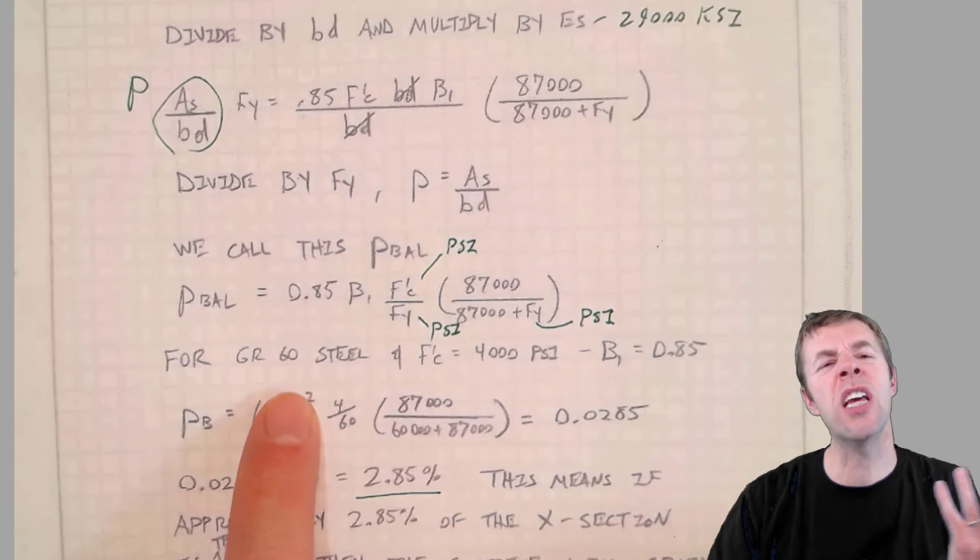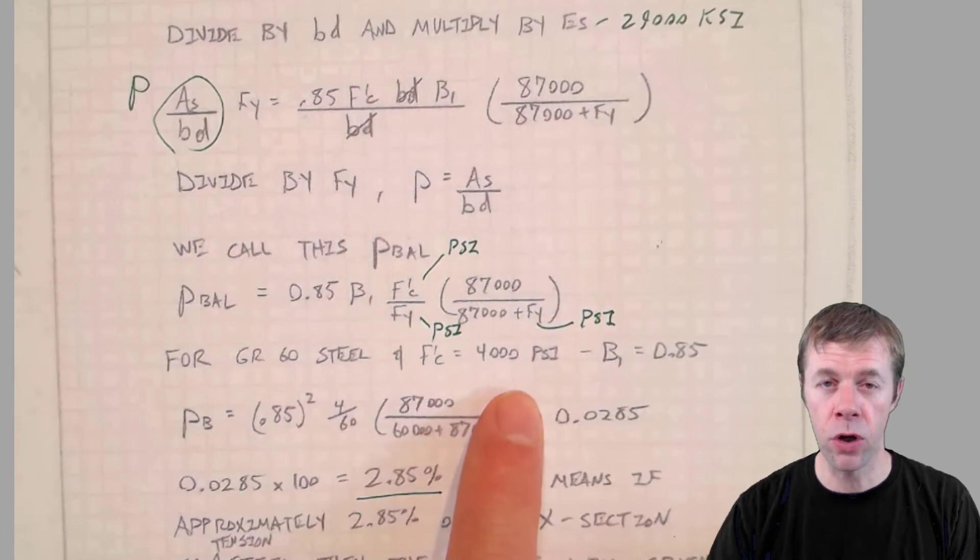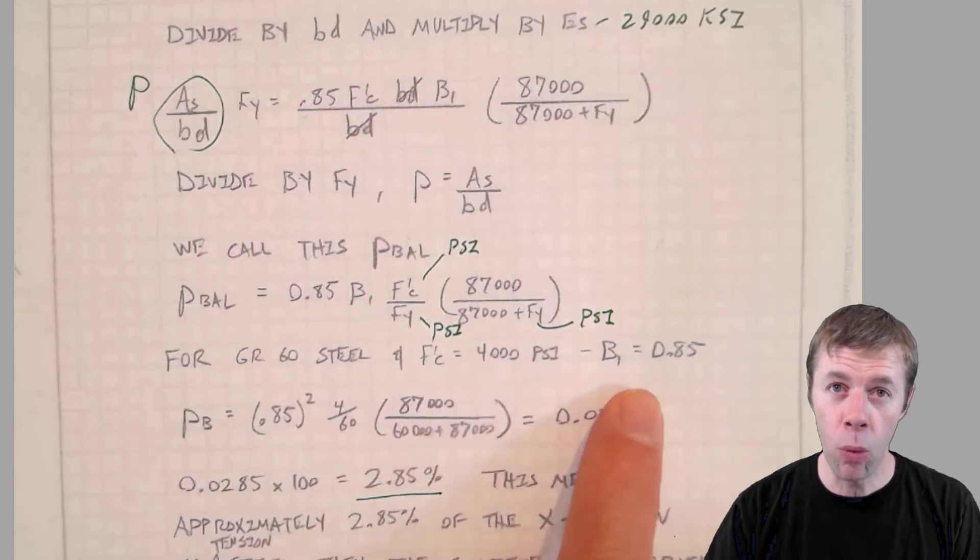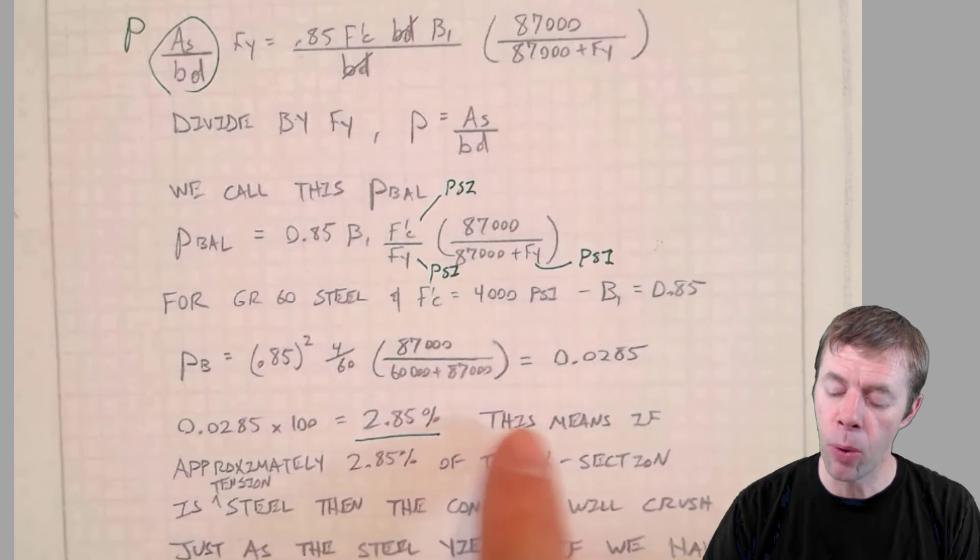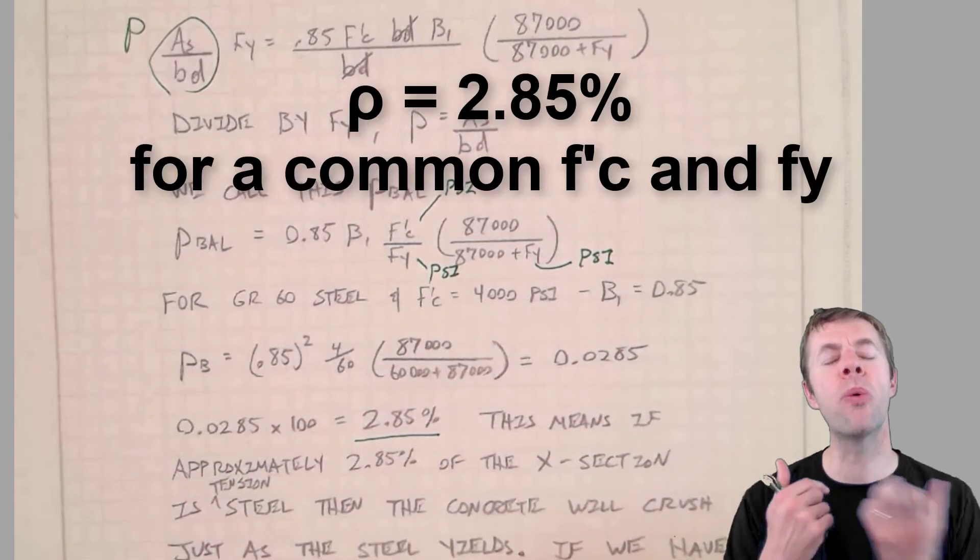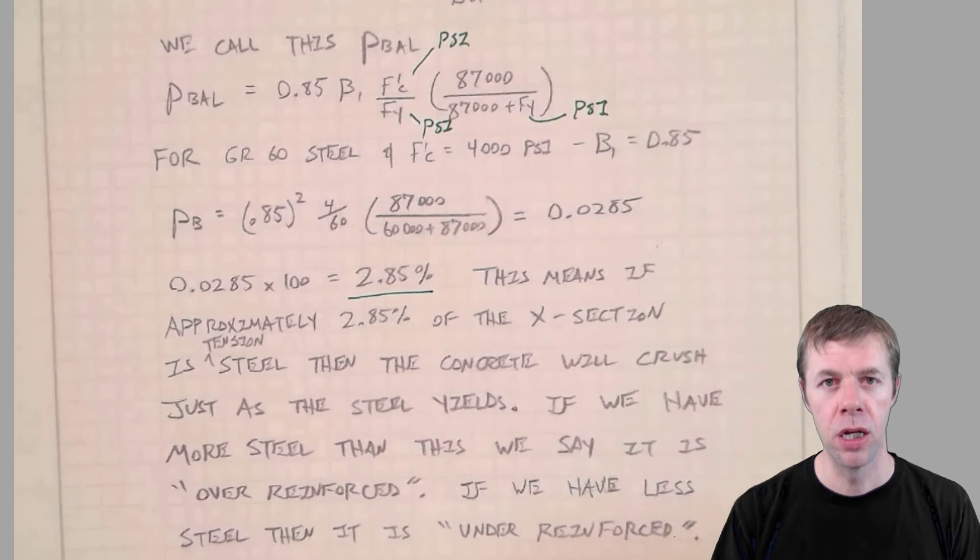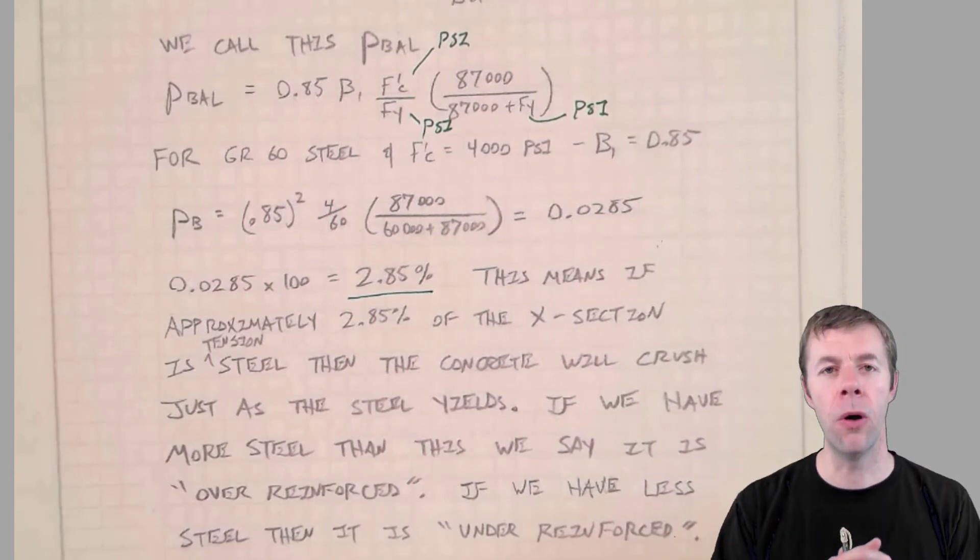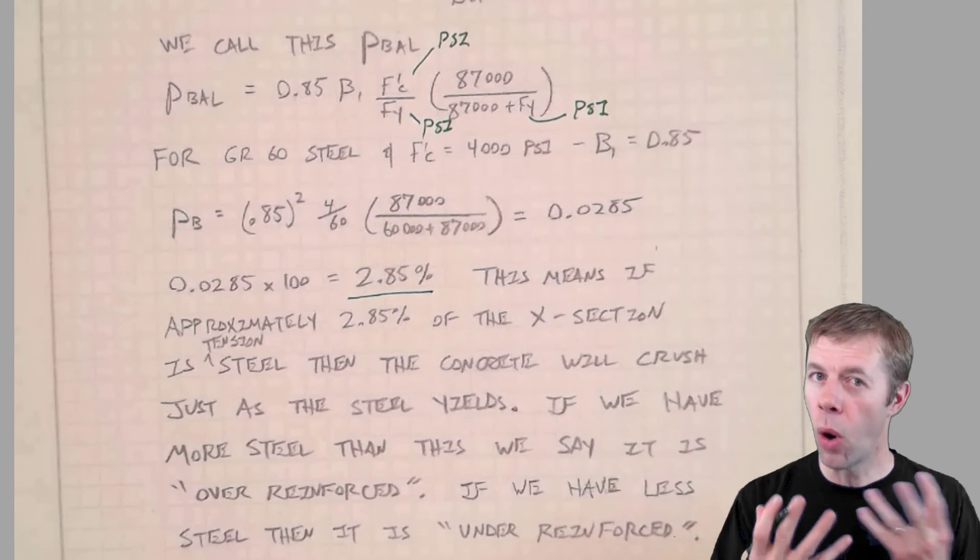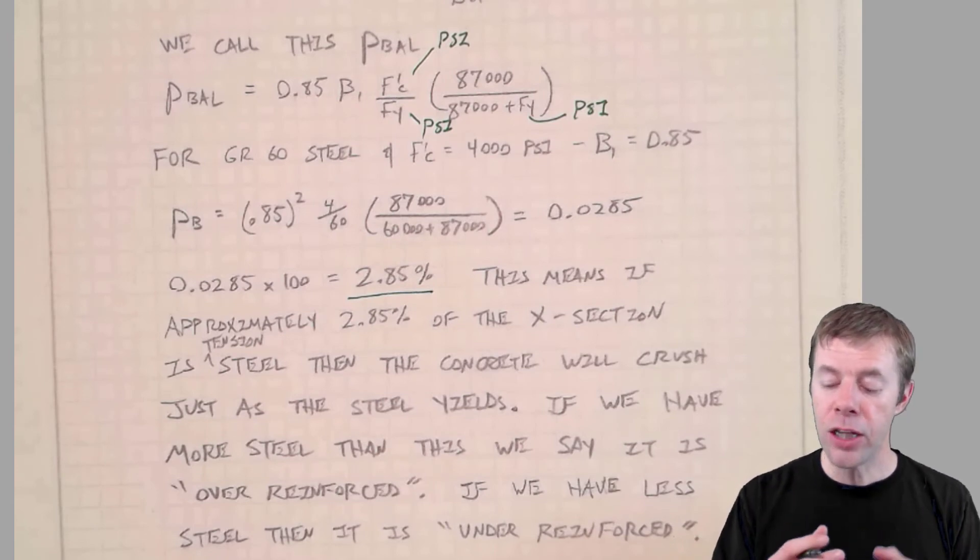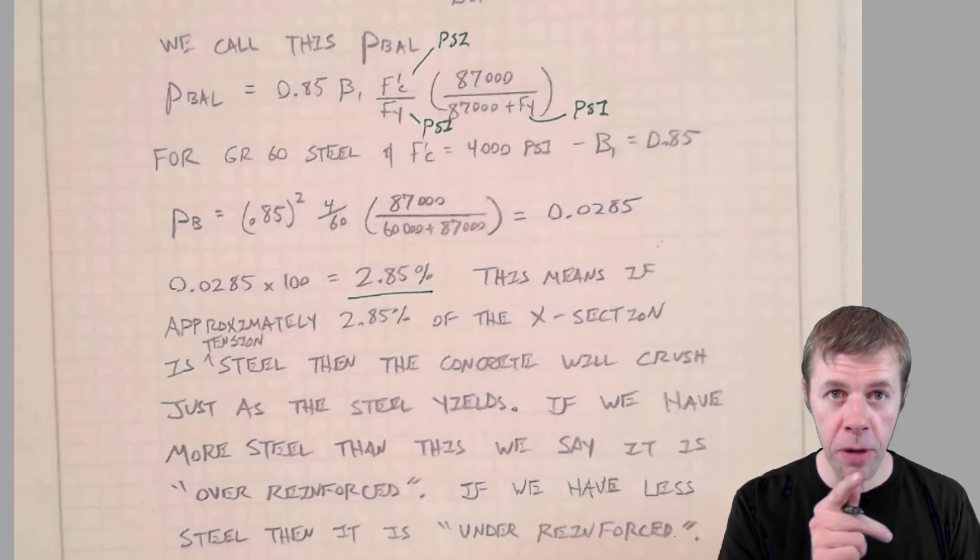And let's just pick some numbers just to get a feel. For 60 KSI steel, which is very common. And F'C, that's the compressive strength of concrete of 4,000 PSI, which is very common. We get a beta 1 of 0.85. Talked about beta 1 before. Plug into this equation and we get 0.0285. Multiply this by 100. That means 2.85%. When I get a rho balance of 2.85% or when 2.85% of my cross section is made up of reinforcing steel. That is the danger zone. That is something you should just have in your mind, something you have for feel that you don't want that much steel inside your concrete. And you don't want to be anywhere near there. This is like the cliff, the cliff of doom. You want to be away from it.